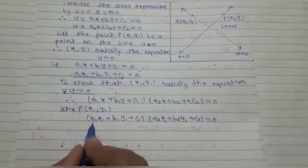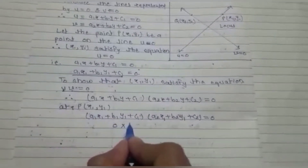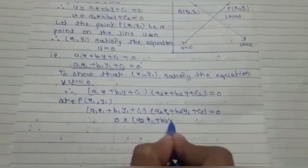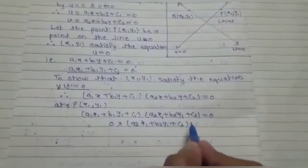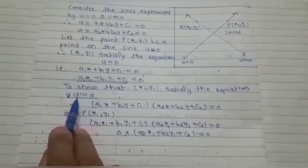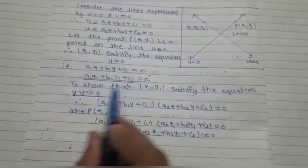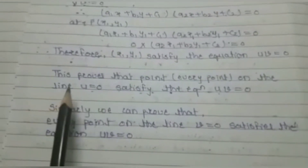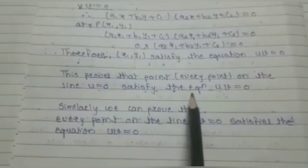We already know that a1·x1 + b1·y1 + c1 = 0, so this becomes 0 × (a2·x1 + b2·y1 + c2) = 0, which is indeed equal to 0. Therefore LHS = RHS, meaning this point satisfies the equation uv = 0. This proves that every point on the line u = 0 satisfies the equation uv = 0.